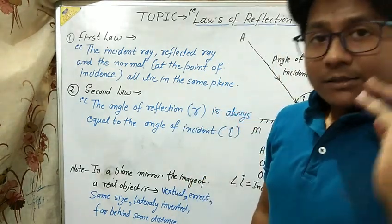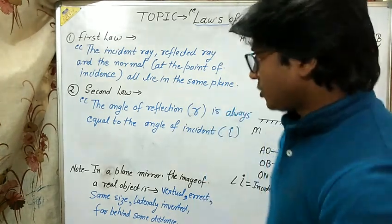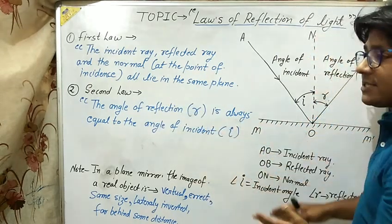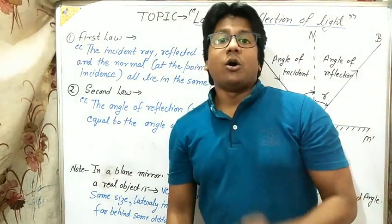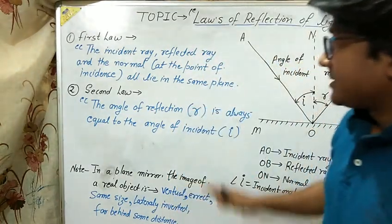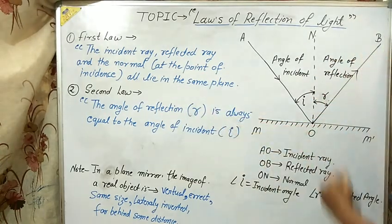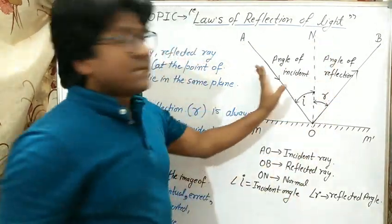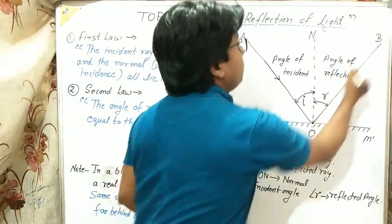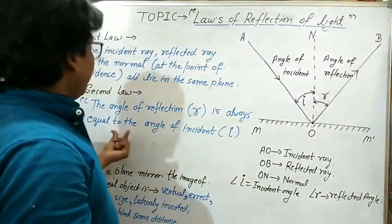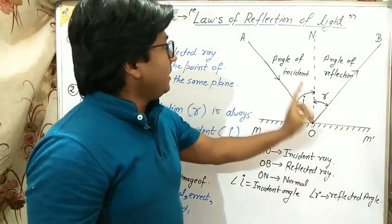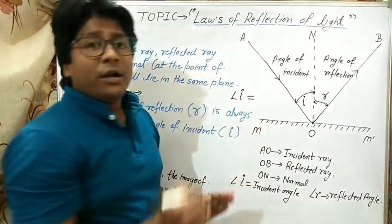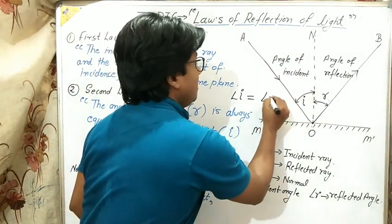The second law is very simple: the angle of reflection is equal to the angle of incidence. Looking at the figure, AON is the angle of incidence and NOB is the angle of reflection. According to the second law, AON is equal to NOB — meaning angle of incidence (i) is equal to angle of reflection (r).